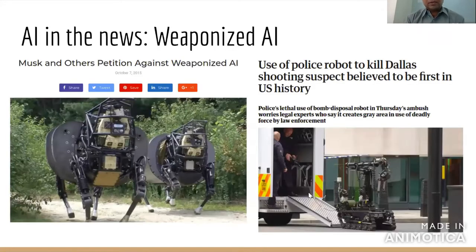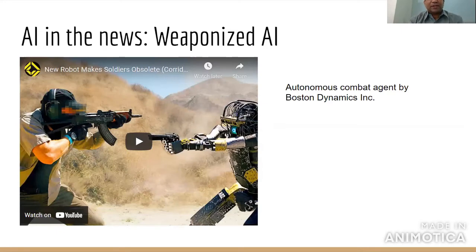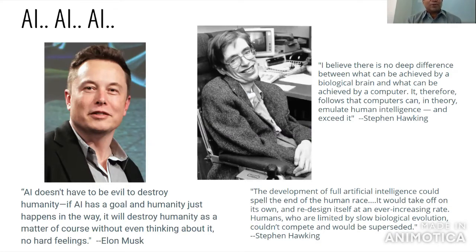We also saw how AI can be weaponized — the example of a 2016 incident where an autonomous robot was sent in to kill an armed criminal. We also saw a video from Boston Dynamics again where robots which could dance can also be used in combat, performing pretty complex combat maneuvers. So AI has generated a lot of buzz, and a lot of people are talking about whether AI will take over humanity. This debate has been there for a while, but has rekindled due to several technological advancements. I put up some quotes from well-known people like Elon Musk and Stephen Hawking.